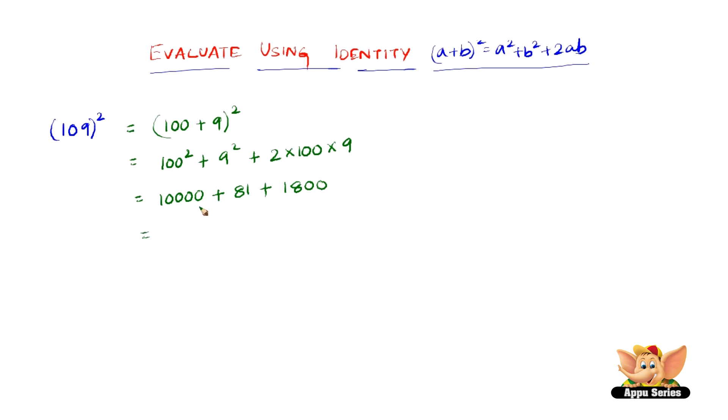Now 10,000 plus 1800 plus 81 equals 11,881. So 11,881 is the expansion of 109 the whole square.